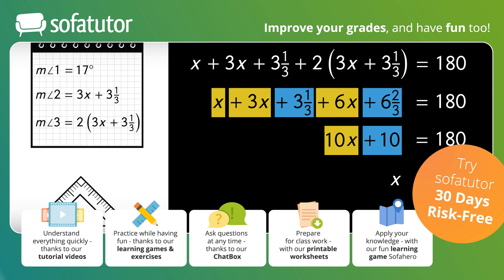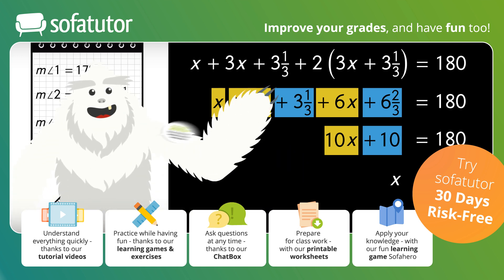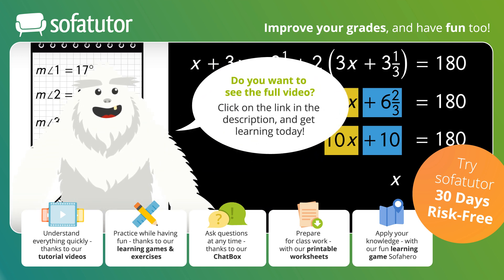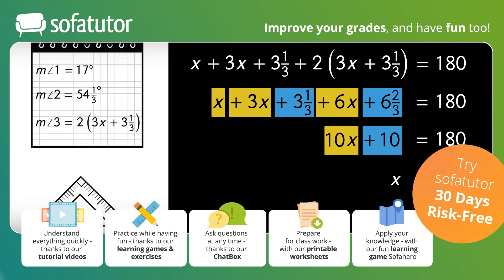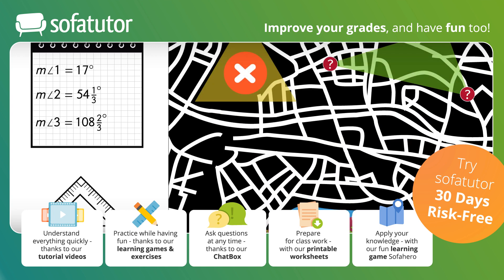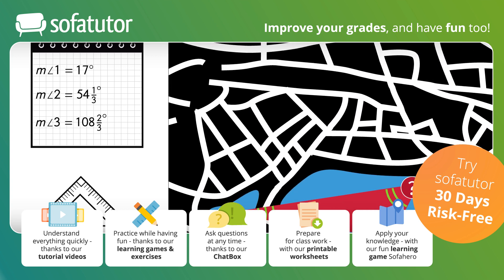Substituting back, our first angle is 17 degrees. Plugging 17 into the equation for angle 2, we get 3 times 17 plus 3 and 1 third: 3 times 17 is 51, and adding gives us 54 and 1 third degrees. For angle 3, we already solved the part inside the parentheses as 54 and 1 third, so multiplying by 2 gives 108 and 2 thirds degrees. But this can't be it — this whole triangle is in the water, so unless Irving needs scuba gear, this isn't it either.